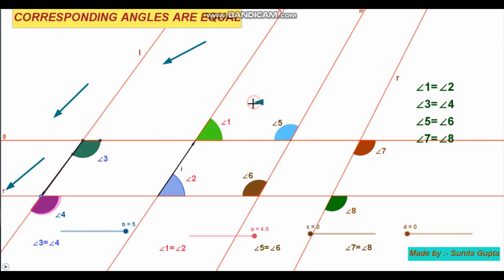Angle 1 and angle 2 are the first pair. Angle 3 and angle 4 are the second pair. Angle 5 and angle 6 are the third pair. Angle 7 and angle 8 are the fourth pair of corresponding angles.